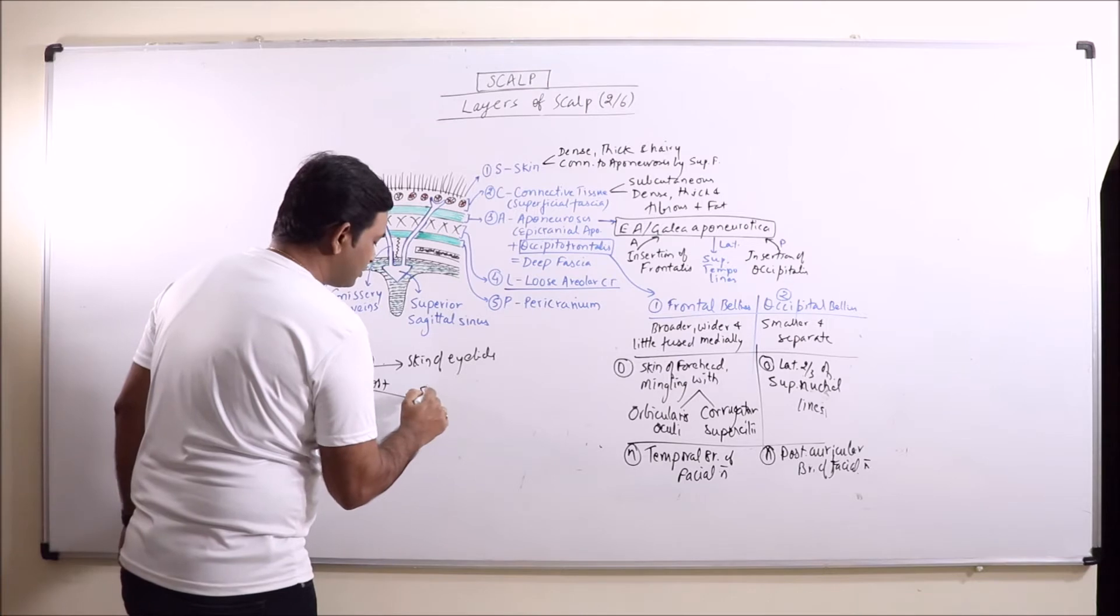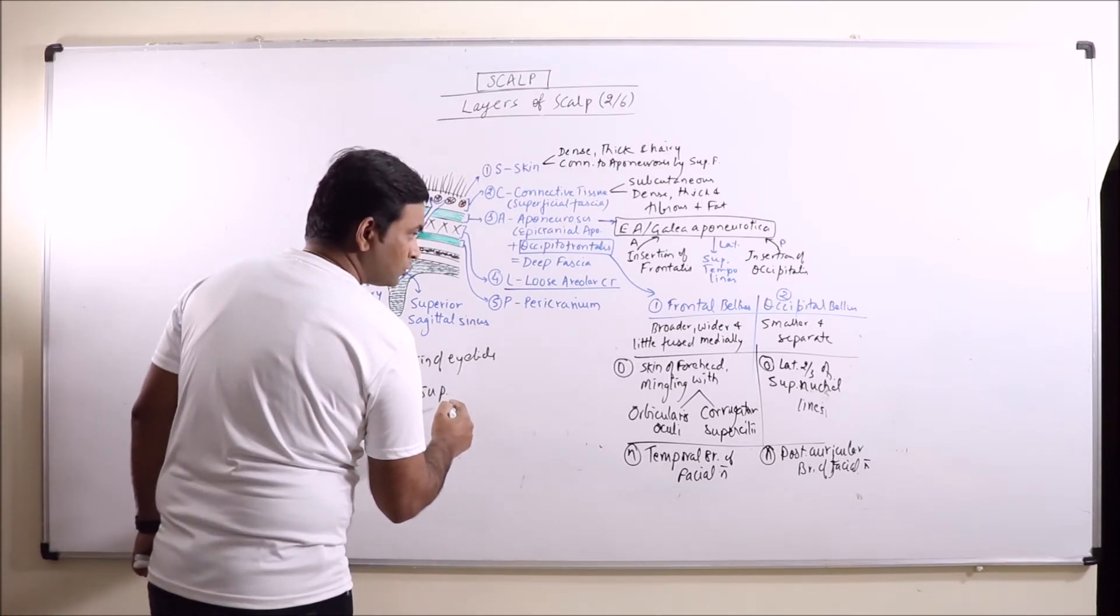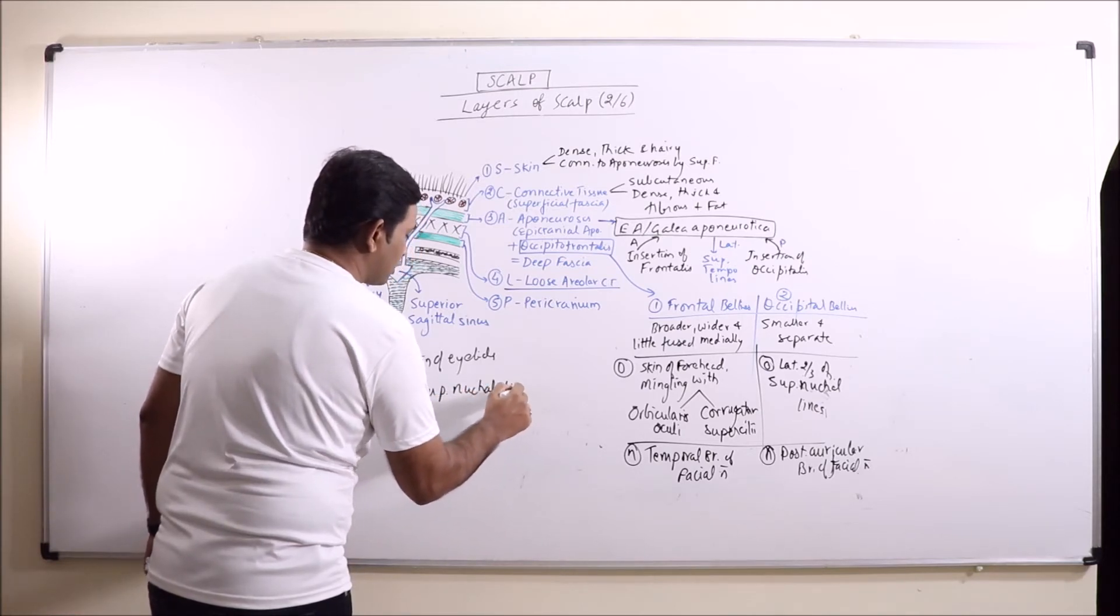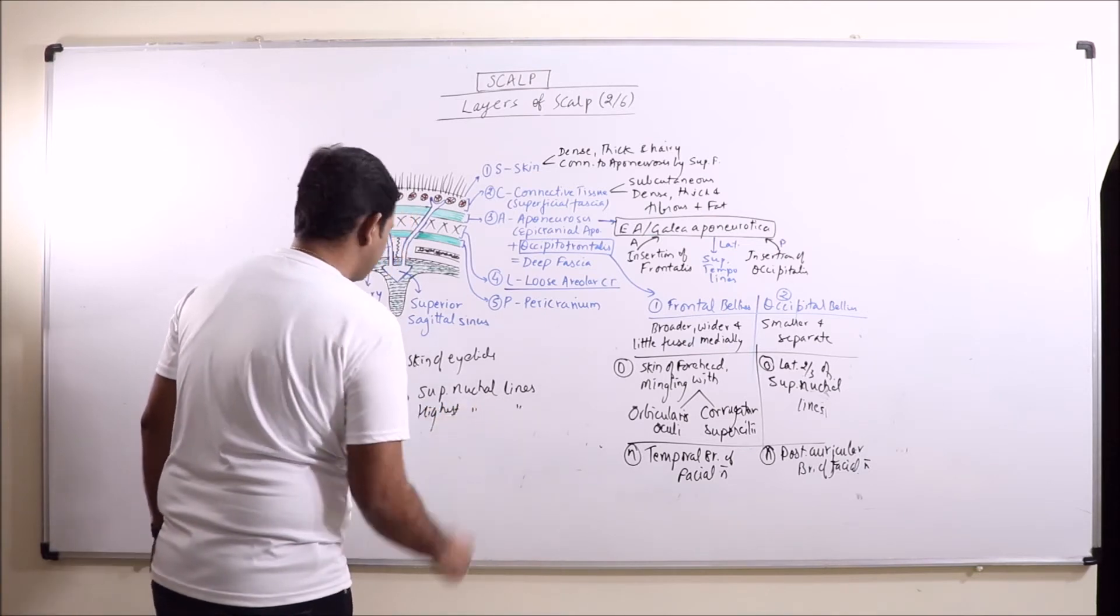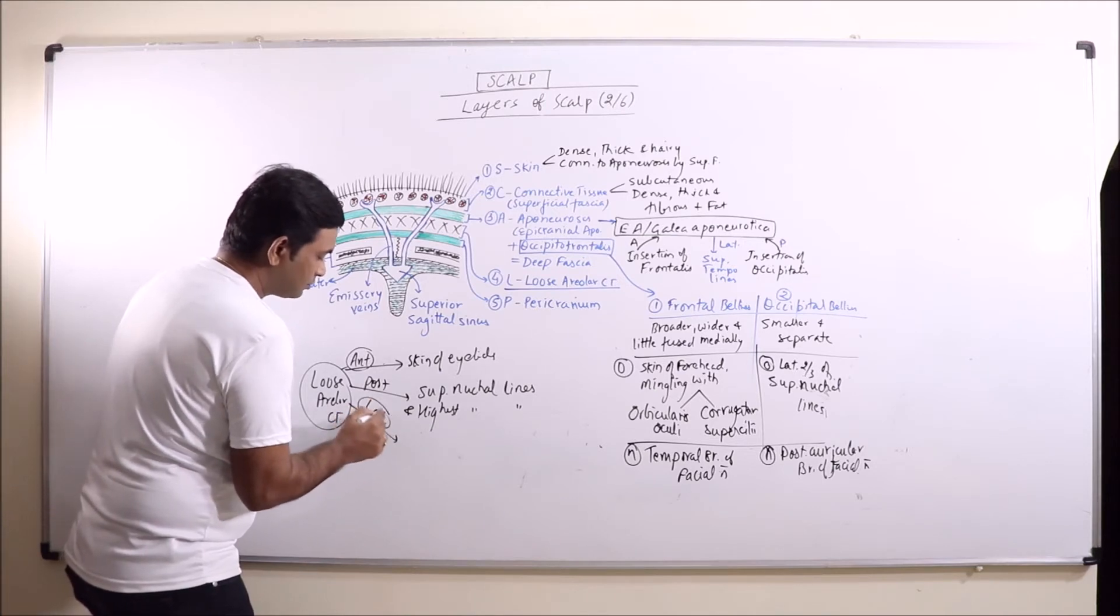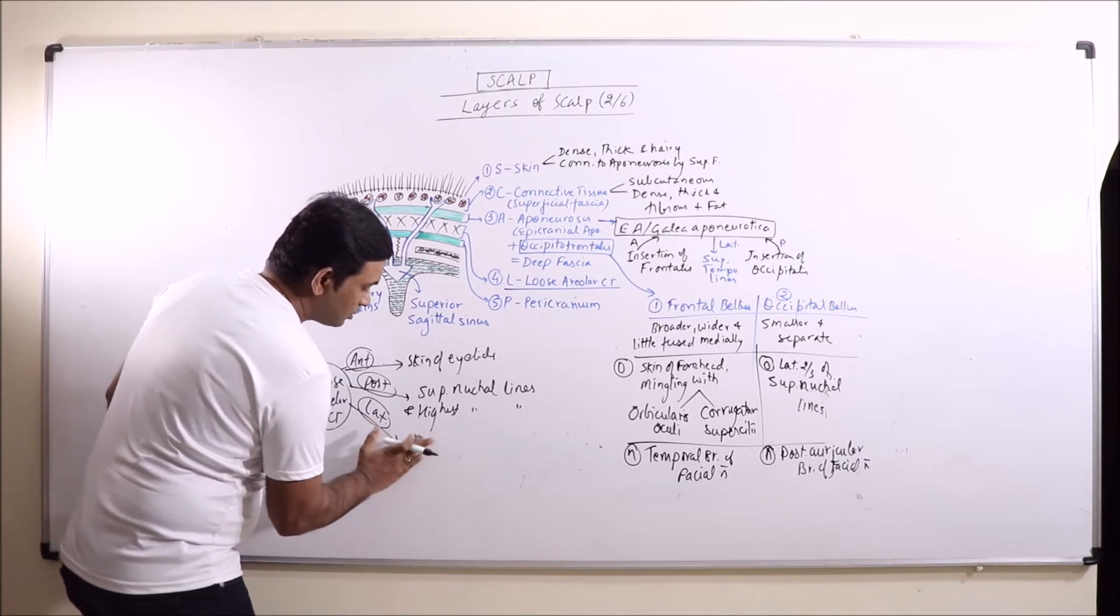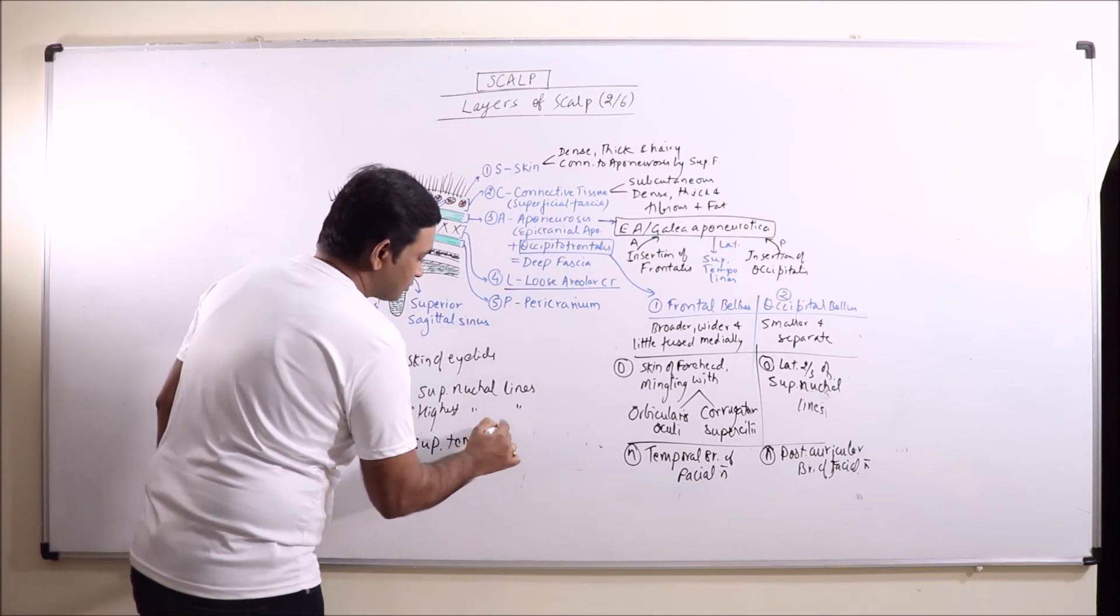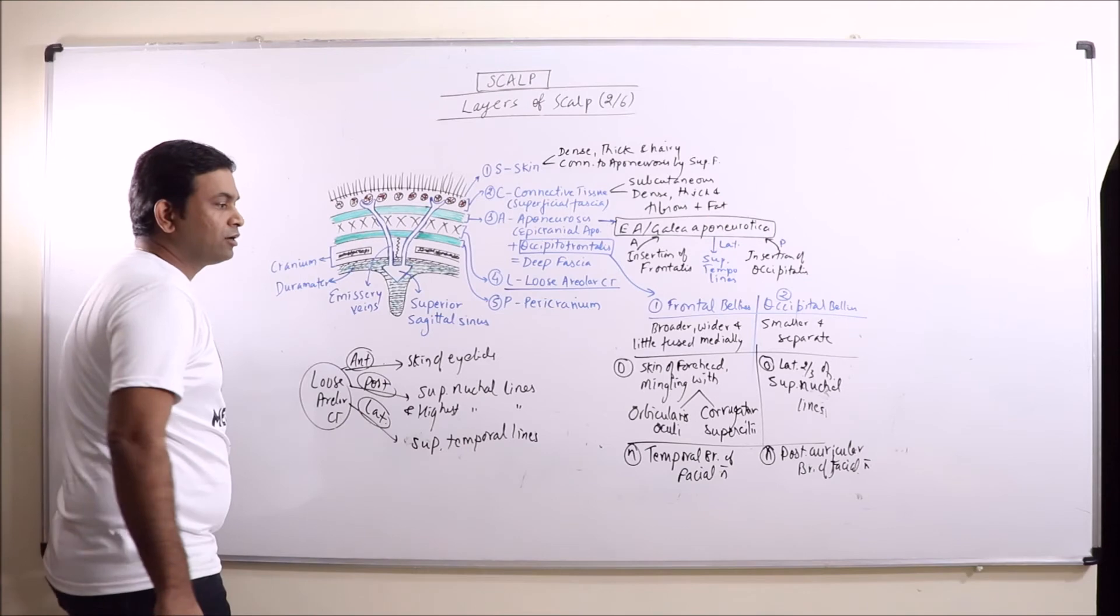Posteriorly it is connected with superior nuchal lines and highest nuchal lines. Laterally it is connected to superior temporal lines. So this is loose areolar connective tissue.